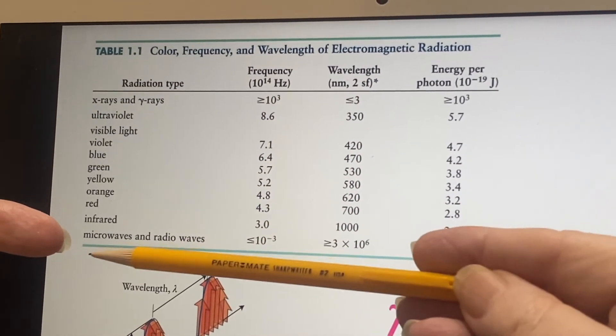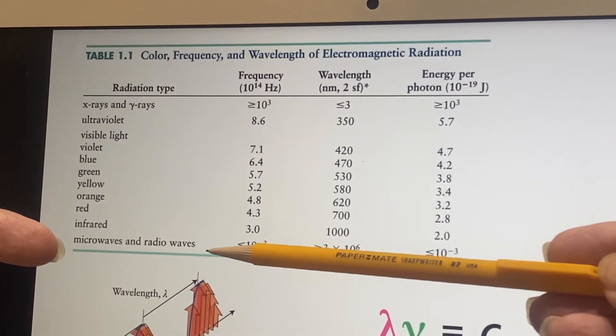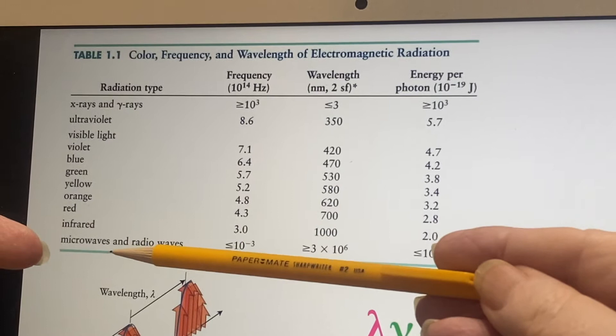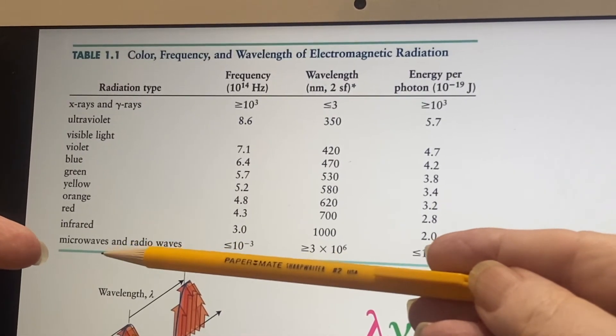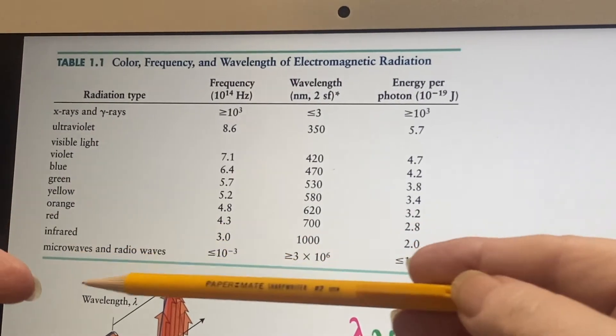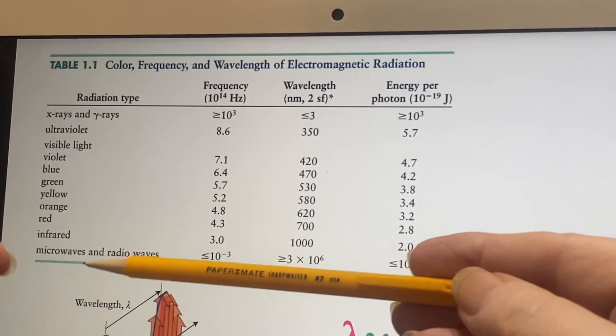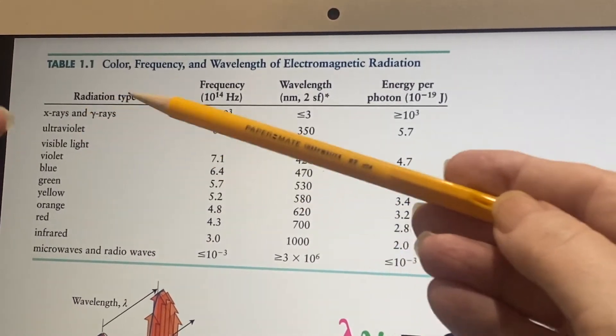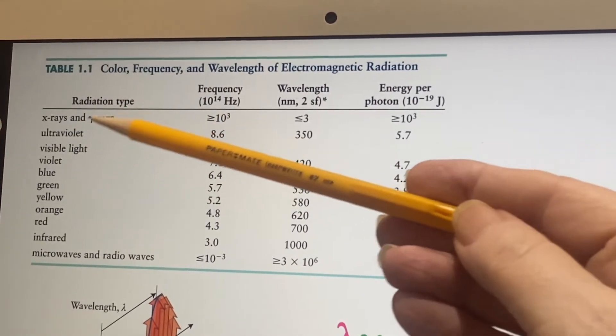And then past that, you get microwaves and radio waves. So we commonly associate infrared with just heat. Microwaves, well, if you put something in your microwave oven, it does end up heating up, right? On this end, we're talking about radiation that tends to heat things. Up here, we're talking about radiation that tends to ionize things.